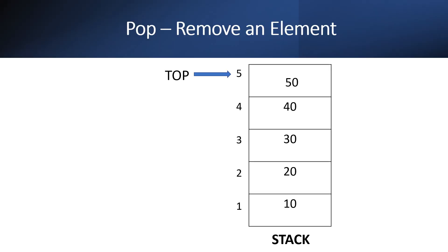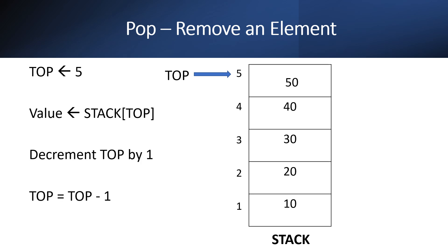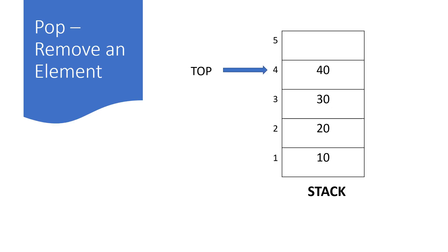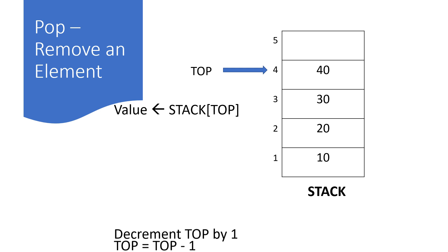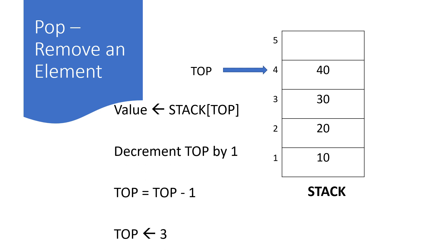Pop operation means removing an element from the stack. To perform this operation, just decrement the value of top by one. In this example, there are five elements in the stack. Top points to index 5, which has the last element of the stack. According to the LIFO principle, element 50 will be removed first. We remove the element pointed to by the top variable, as it indicates the last element. After decrementing top, it will be 4. If we perform pop operation again, element 40 will be removed: decrement top by one, it will be 3, and 40 will be removed. The stack will look like this.